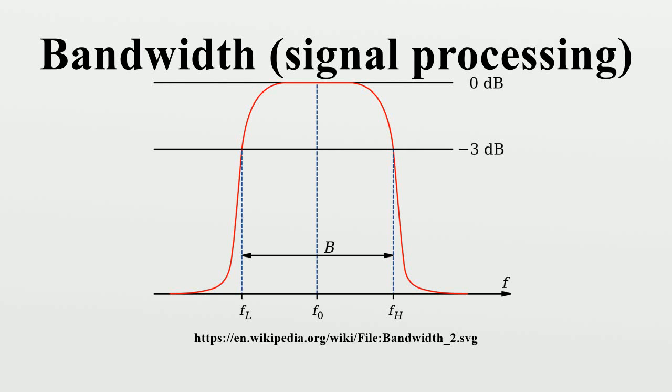Bandwidth is the difference between the upper and lower frequencies in a continuous set of frequencies. It is typically measured in Hertz and may sometimes refer to passband bandwidth, sometimes to baseband bandwidth, depending on context.